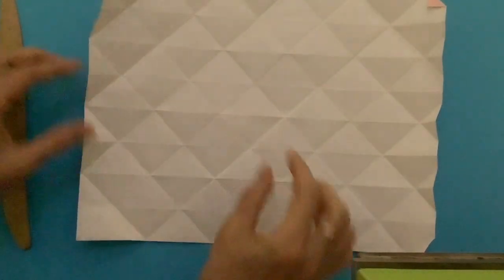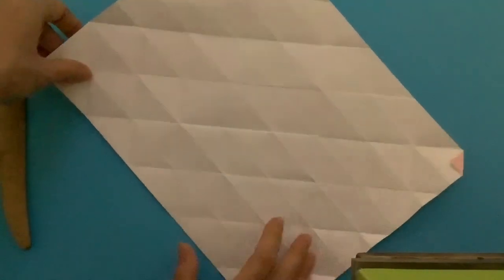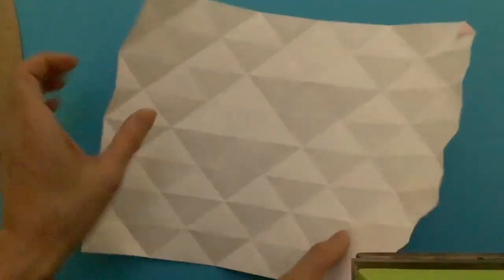So these are all squares, diamond square. Maybe you can see it this way. Yes. And now you are done.